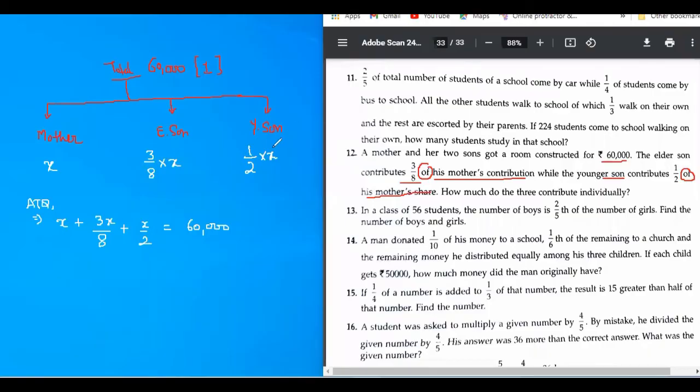So, what will be the next step? LCM? Yeah. So, 8X upon 8 plus 3X upon 8 plus 4X upon 8 equals to 60,000.